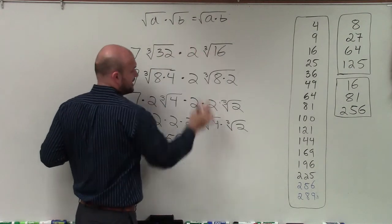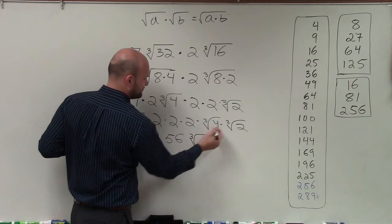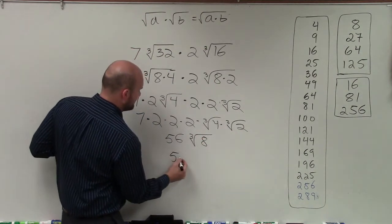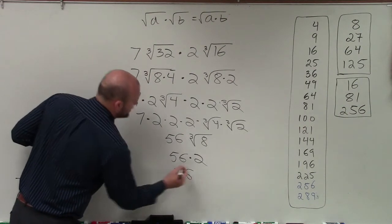Following my rules of radicals, I can multiply the 4 times 2, which gives me 4—or cube root of 8, which we know is just 2. So I have 56 times 2. And 56 times 2 is going to be 116.